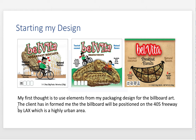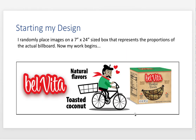To be in proportion to the actual final billboard of 14 by 48 feet, I'll scale it to 14 by 48 inches, then halve that to 7 by 24 inches horizontal. That represents the proportion of the actual billboard — notice how narrow it is. The client has informed me — I'm just making this up — the billboard will be positioned on the 405 freeway by LAX airport, a highly urban area. Can I make a connection with my breakfast biscuits, cookies, and flying? We'll see.